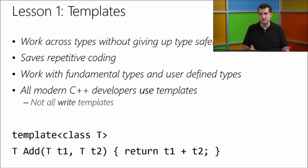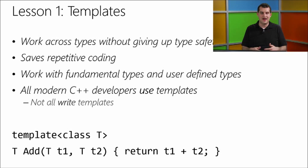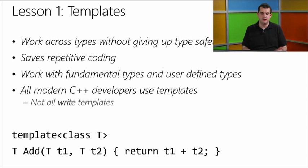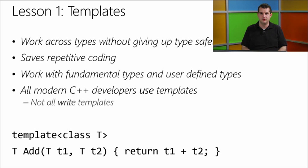We could call this function template with two ints, and it would do integer addition and return an int. Or we could call it with two doubles, and it would do floating-point addition. We could do it with strings — pass in two strings and it would concatenate them and return the result. So basically this works with any type that supports the plus operator, including std::string, fundamental types, and user-defined types.